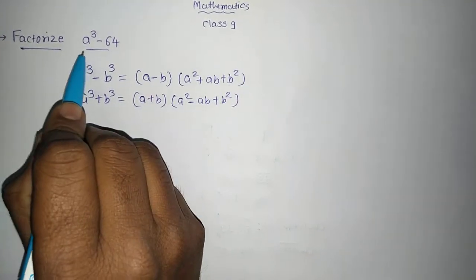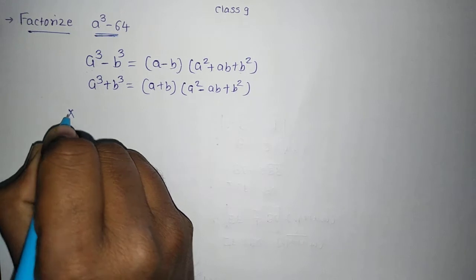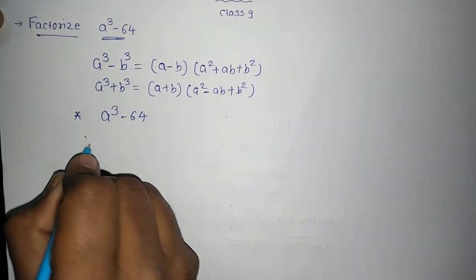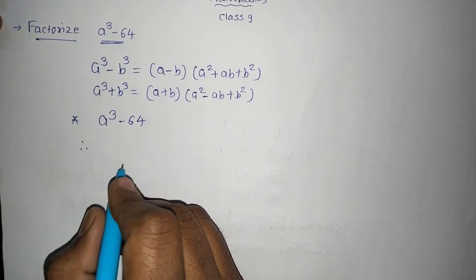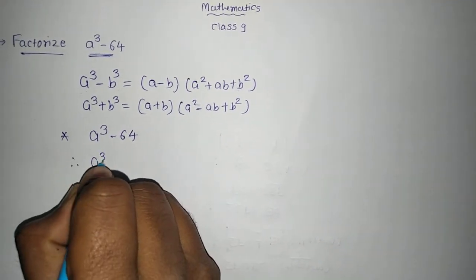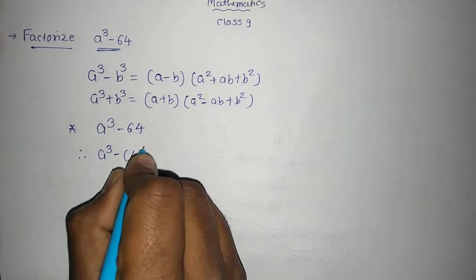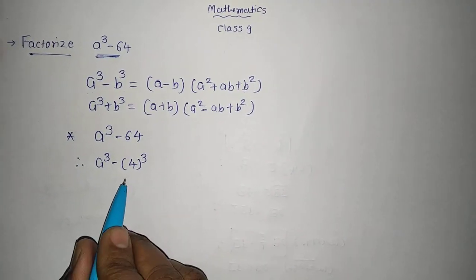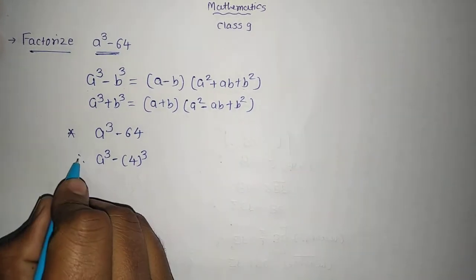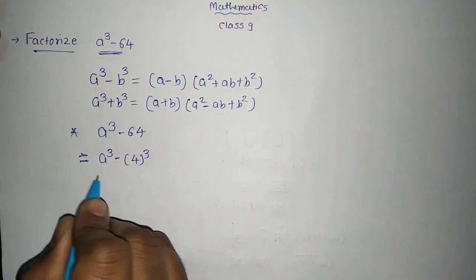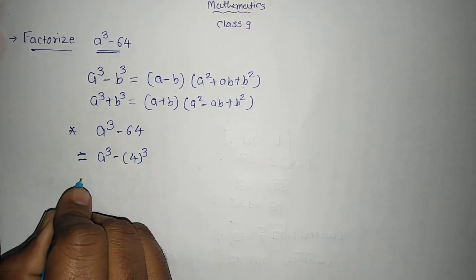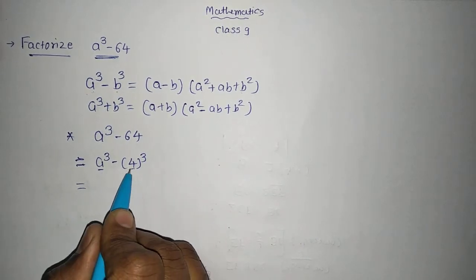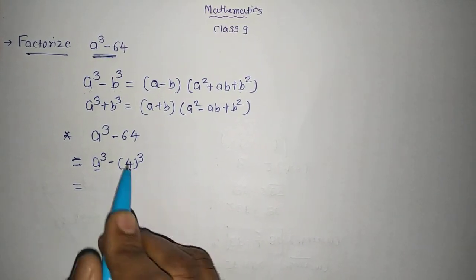Now here you can see it is a cube minus 64. We should write it as a cube minus 64. You know that 64 is the cube of 4, so we should write it as a cube minus 4 cube. 4 times 4 is 16, into 4 is equal to 64. So we write a cube minus 4 cube, and this is just like a cube minus b cube, where a is a and b will be considered as 4.